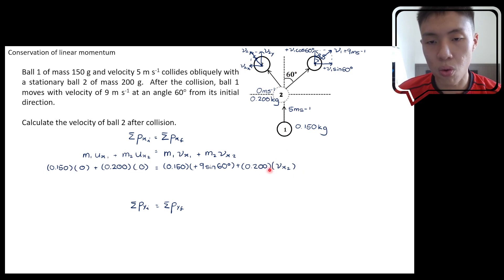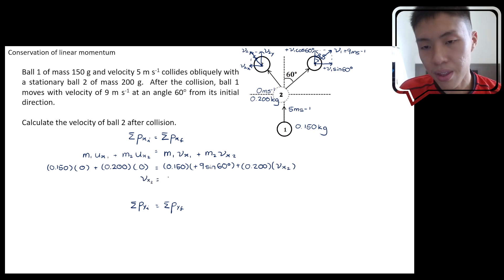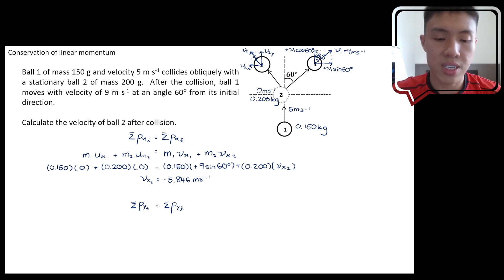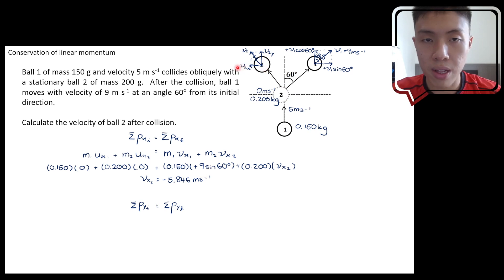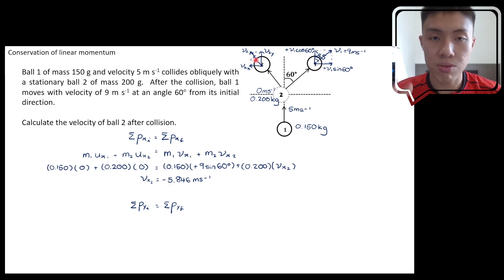This equation has only one unknown, so we solve for vx2. Entering it into the calculator gives vx2 = −5.846 m/s. The negative value makes sense because ball 2 is moving to the left, and leftward motion in the x-direction is negative.